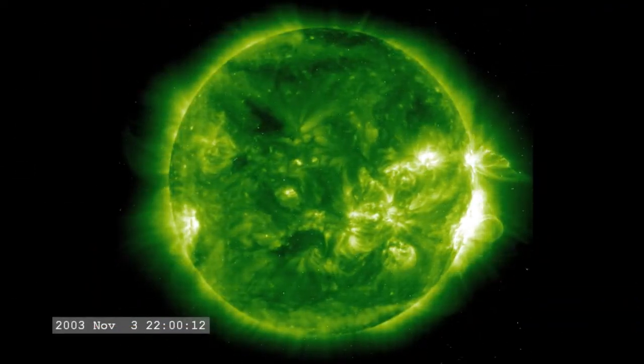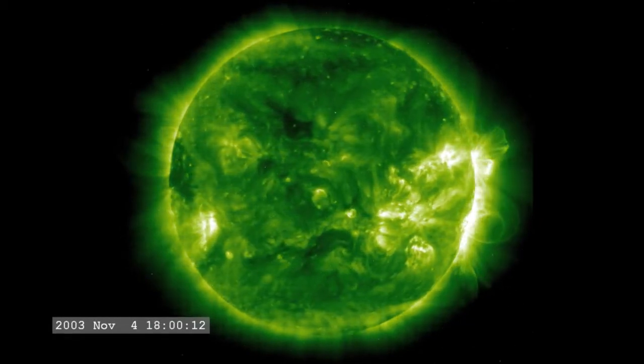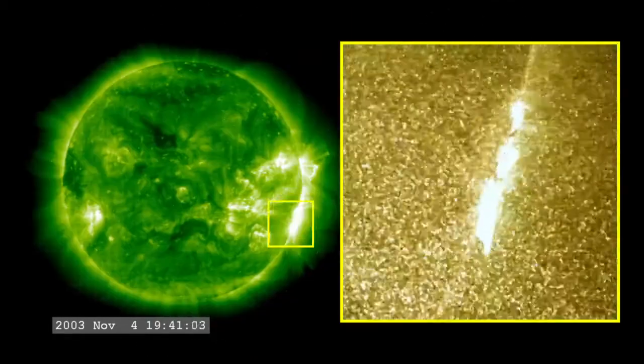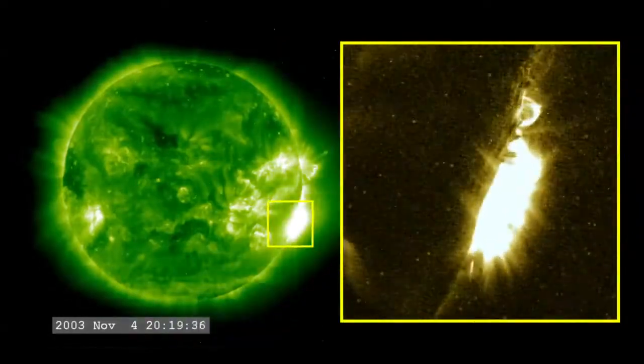The most powerful flare on record was in 2003, during the last solar maximum. It was so powerful that it overloaded the sensors measuring it. They cut out at X-17, and the flare was later estimated to be about X-45.